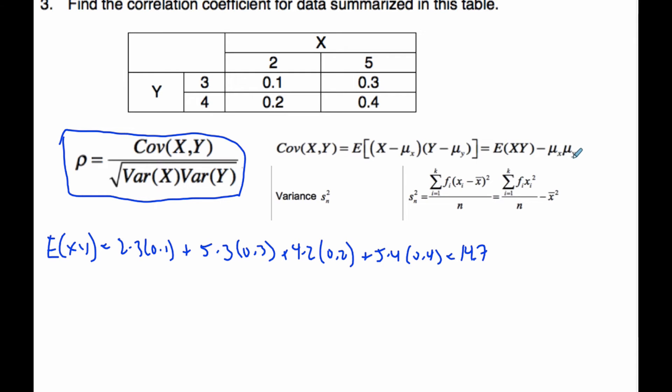I also need to find the expected value of X and the expected value of Y. I can recognize that this is 0.3 and this is 0.7. So the expected value of X is simply 2 times 0.3 plus 5 times 0.7, which I calculated out to be 4.1.